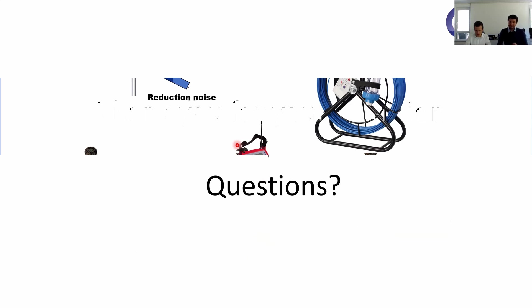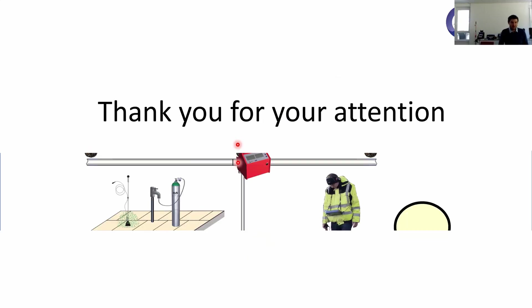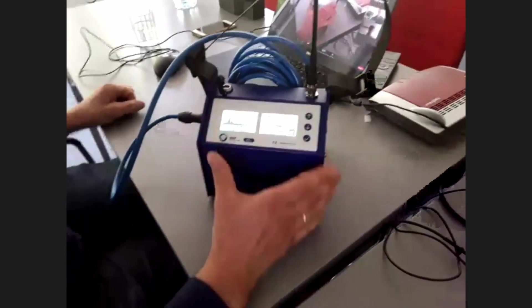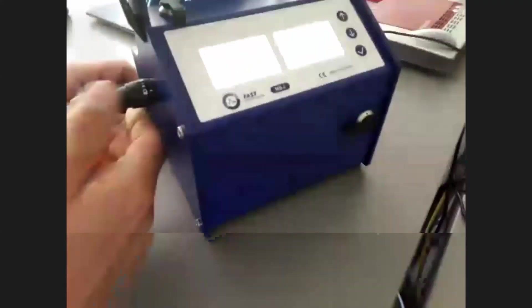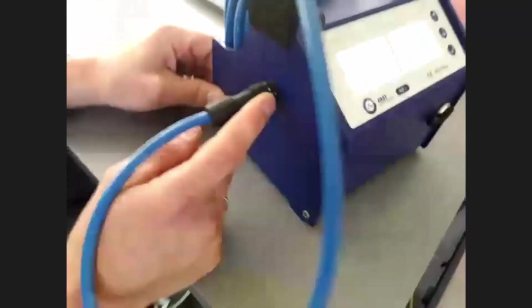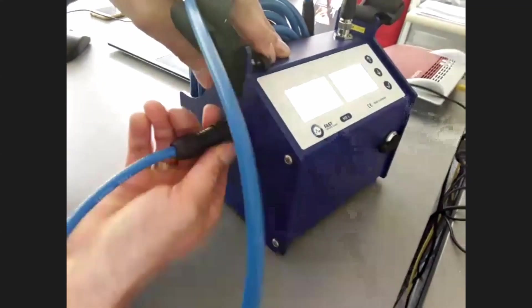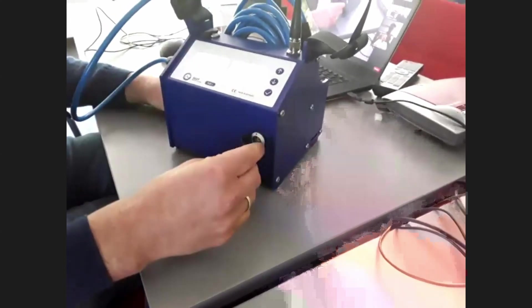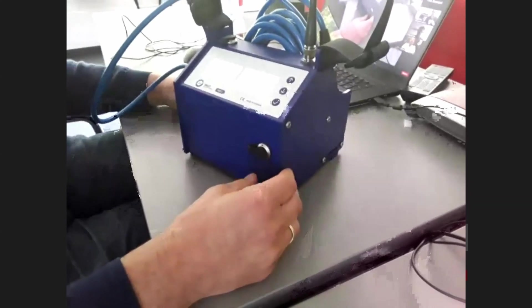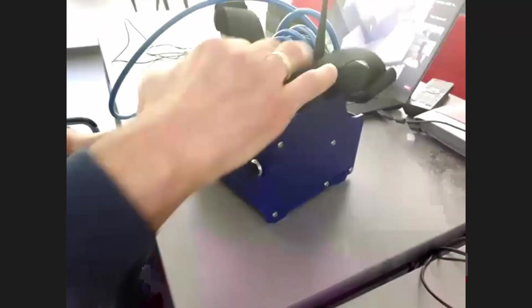We are now through with the theory part and go into the demonstration. We will start showing you the MB-6 and how to set it up. We have here with us the professional version — this is the brand new MB-6 model. You see it has three connection points: one on the side for the sensor connection, which is an IP68 connector, quite nice to connect with a bayonet switch.